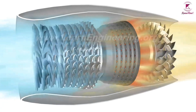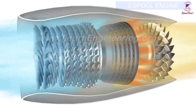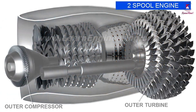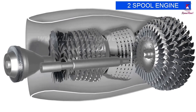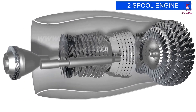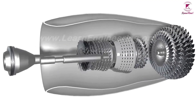Some advanced engines have additional spools for even higher efficiency. Before going onward, let's understand the meaning of spool. A spool is a shaft or rod on which the turbines of the jet engine rotate.